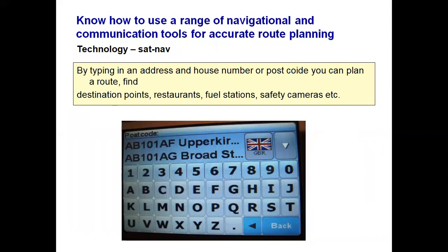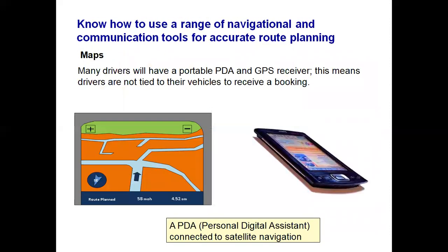Sat Nav: by typing in an address, house number or postcode you can plan your route. Destination points such as restaurants, fuel stations and safety cameras can also be found. If you are lost or in an unfamiliar area, use the maps facility to find your destination. You can display the map in 2D or 3D, and set it to face north or in a directional orientation.